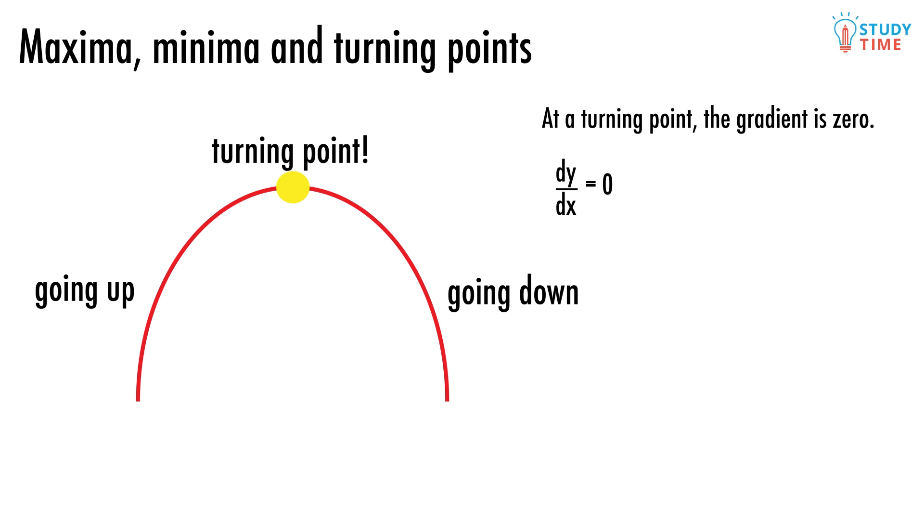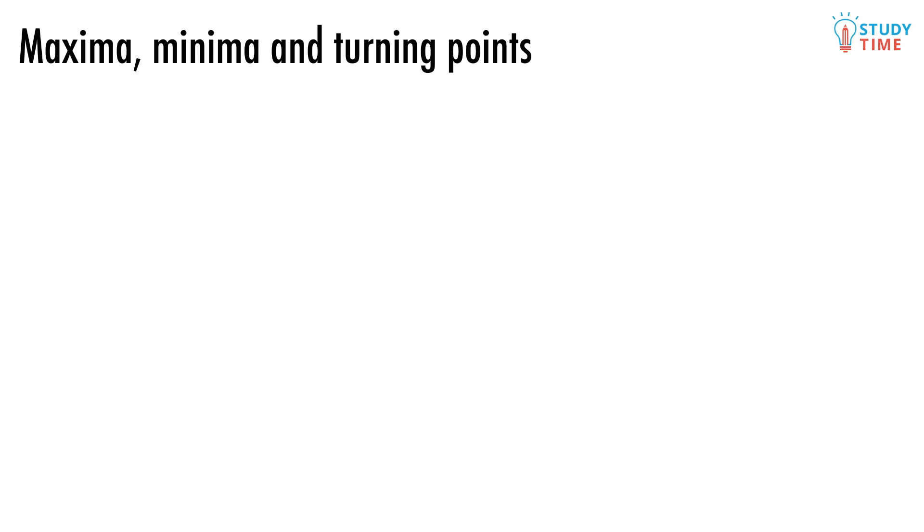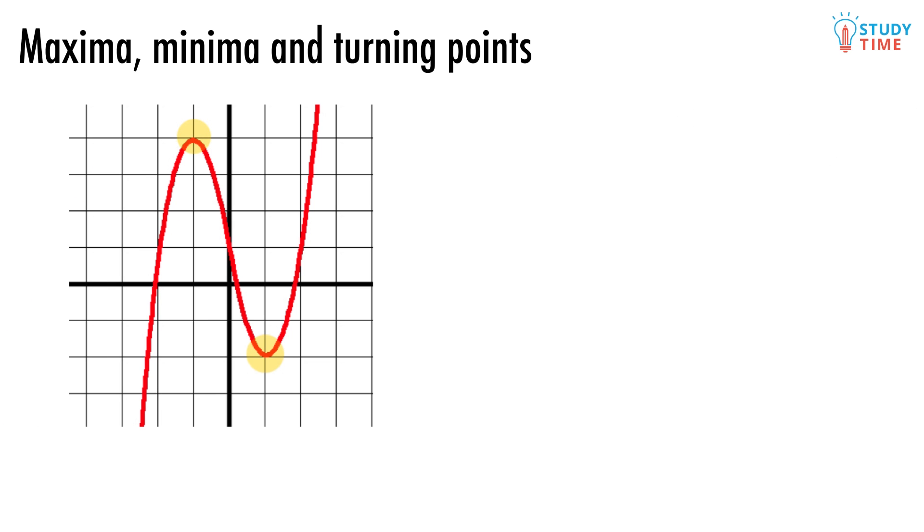Or like Isaac Newton would have preferred us to say it, dy dx equals 0. We can use this information to figure out where the turning points of a graph are located. For example, let's take the graph of y equals x cubed minus 4x plus 1.